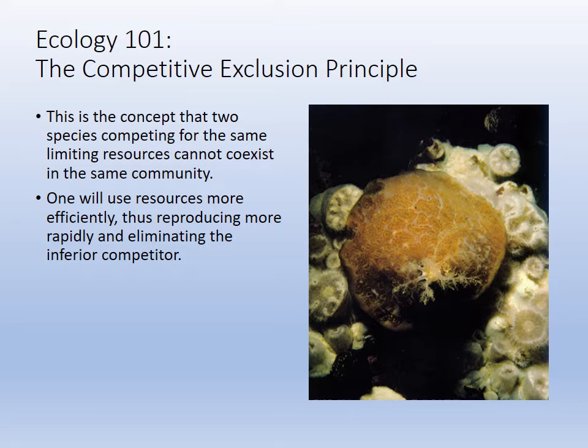Competitive exclusion: when organisms compete for the exact same resources, if you remove all factors, one will win and one will lose. However, limiting factors allow many to flourish. A predator that eats multiple prey keeps populations low enough so many can coexist. Remove the predator and one prey species will exclude the others through competitive exclusion. When there are many different species, it allows for diversity.